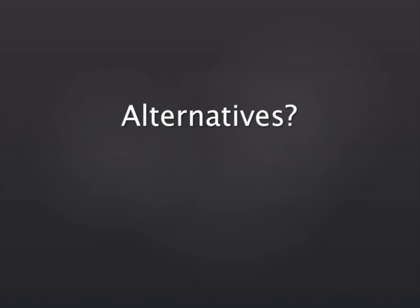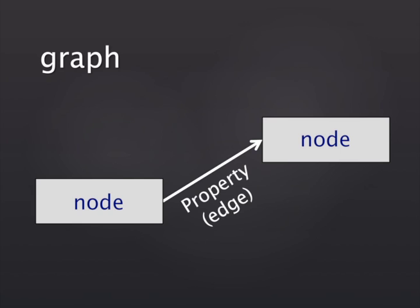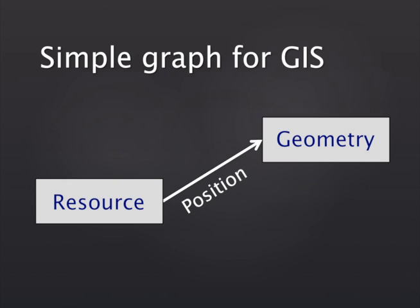Many of you are already familiar with graph data structures, but for those for whom it's a new idea, there's a really simple way to think of it — imagine two objects or two nodes and a relationship between them. In the parlance, it's nodes and edges. You can think about GIS or geodata in a graph structure something along these lines: you have a cultural heritage resource, and it has a relationship with geometry. That's about as simple a way of thinking about geodata in a graph format as you can.